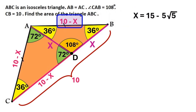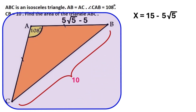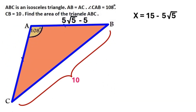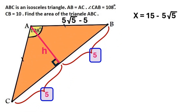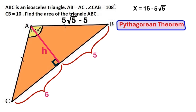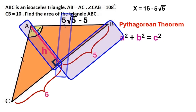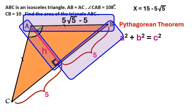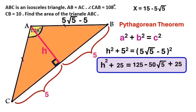Let's tuck away this important finding and substitute X as 15 minus 5 root 5 to get the value for side AB. We no longer need all the extra construction, so let's wipe those out. Since triangle ABC is isosceles, when we draw the height here it divides the base BC into two equal parts of 5 each. Now we've got a right triangle, so it's time for the Pythagorean theorem: the sum of the squares of the shorter sides equals the square of the longest side. The shorter sides are 5 and H, and the long side is 5 times the square root of 5 minus 5.